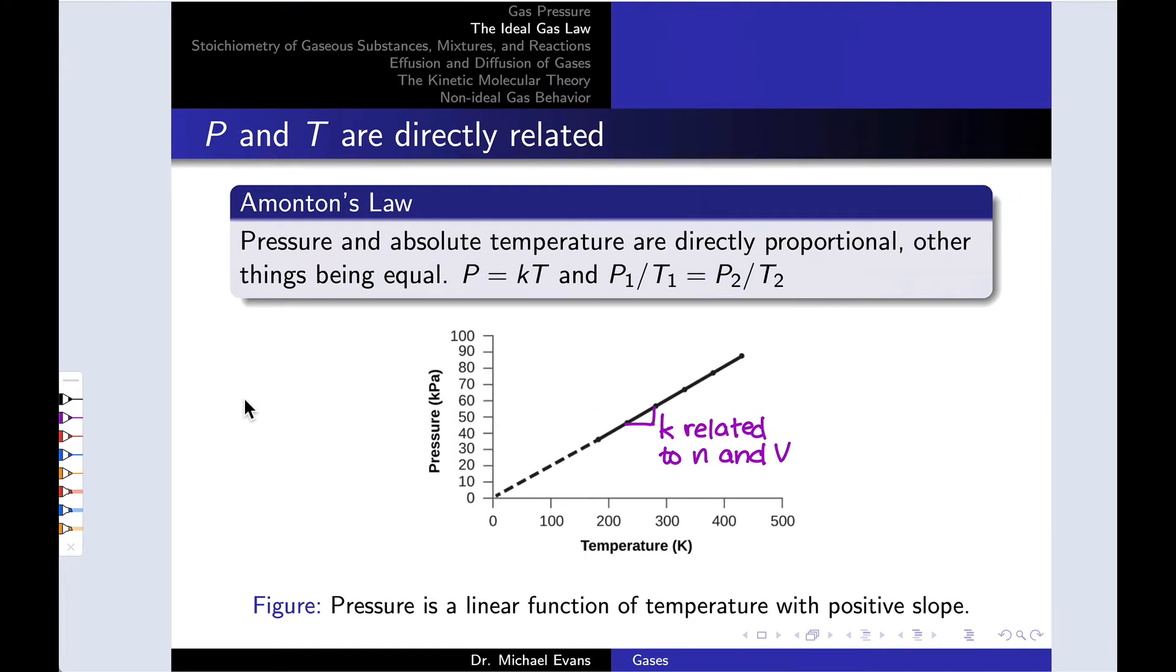On a graph, Amonton's Law looks like this. If we plot pressure as a function of temperature, we get a straight line. The constant of proportionality is the slope of this line, and that slope is related to the number of moles we have and the volume of the container. The specifics of that relationship will be revealed in due time, but you probably already have a pretty good idea of how those relate to the slope right here.